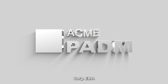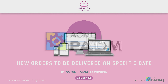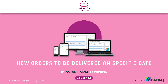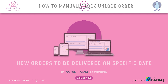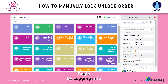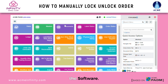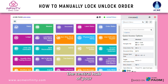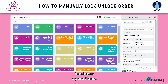Welcome to Infinity Jwell Corp ERP. Let's explore the quick and efficient process of how to manually lock-unlock order. Step 1: Begin by logging into the software. Find yourself on the home screen, the central hub of your business operations.